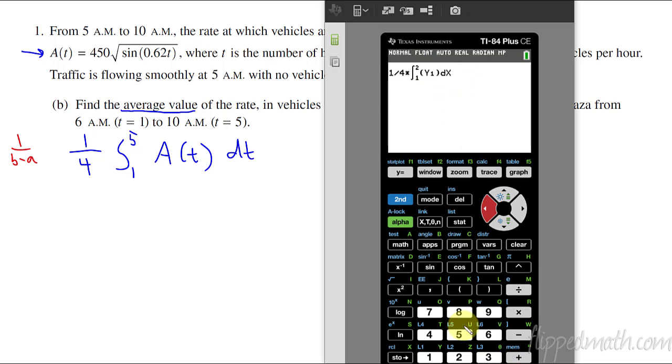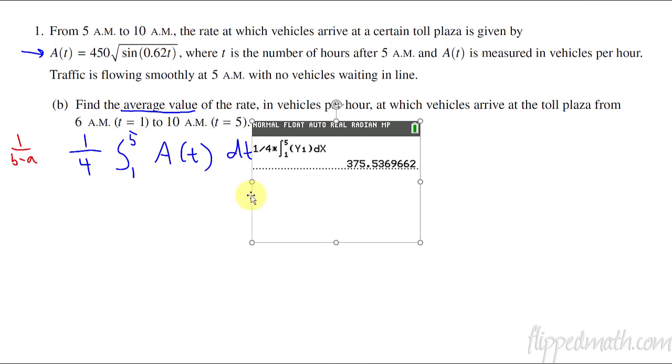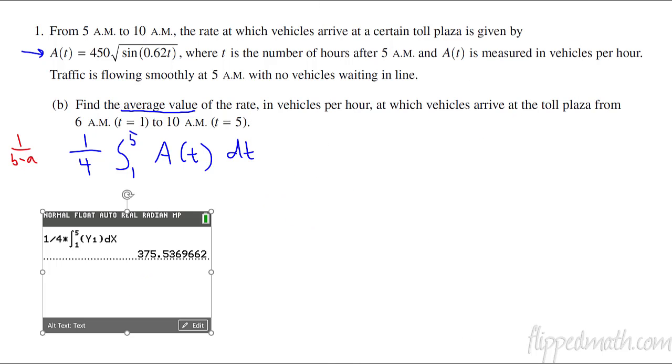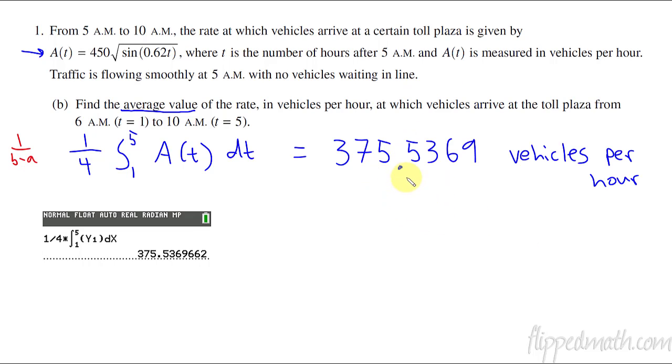Some of you were yelling at me through the computer, that's supposed to be a 5. I said 1 to 2, sorry, from 1 to 5, and then we hit enter and we get 375.563. So we can either truncate it or round it. So there's our answer, 375.536 or 537, and then we put vehicles per hour. My guess is they're giving you a point for setting up the integral, as well as a point for this part here. This is from lesson 8.1, which is the average value of a function on an interval.